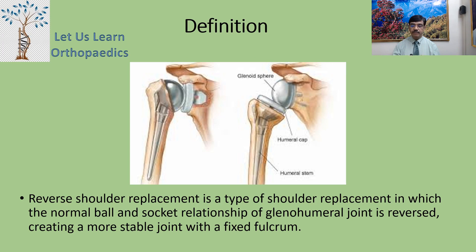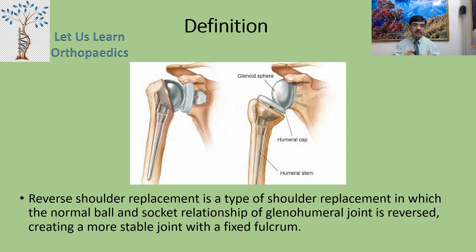Starting with the definition: reverse shoulder replacement is a type of shoulder replacement in which the normal ball and socket relationship of the glenohumeral joint is reversed, creating a more stable joint with a fixed fulcrum. You can see here the normal anatomical shoulder replacement compared to the reverse shoulder replacement arthroplasty.